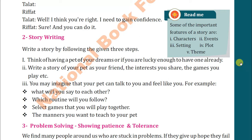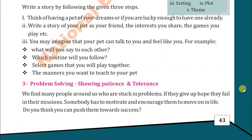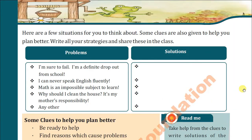Then we come to the next task — number three: problem solving, showing passions and tolerance. We find many people around us who are stuck in problems. If they give up hope, they fail in their missions. Somebody has to motivate and encourage them to move on in life. Do you think you can push them towards success? Now come to page number 44. Here are a few situations for you to think about. Some clues are also given to help you plan better. Write all your strategies and share these in the class. This is a classroom activity. Today I'm just giving you the clue so that you become aware of how this problem will be solved; the actual activity will be done in class.